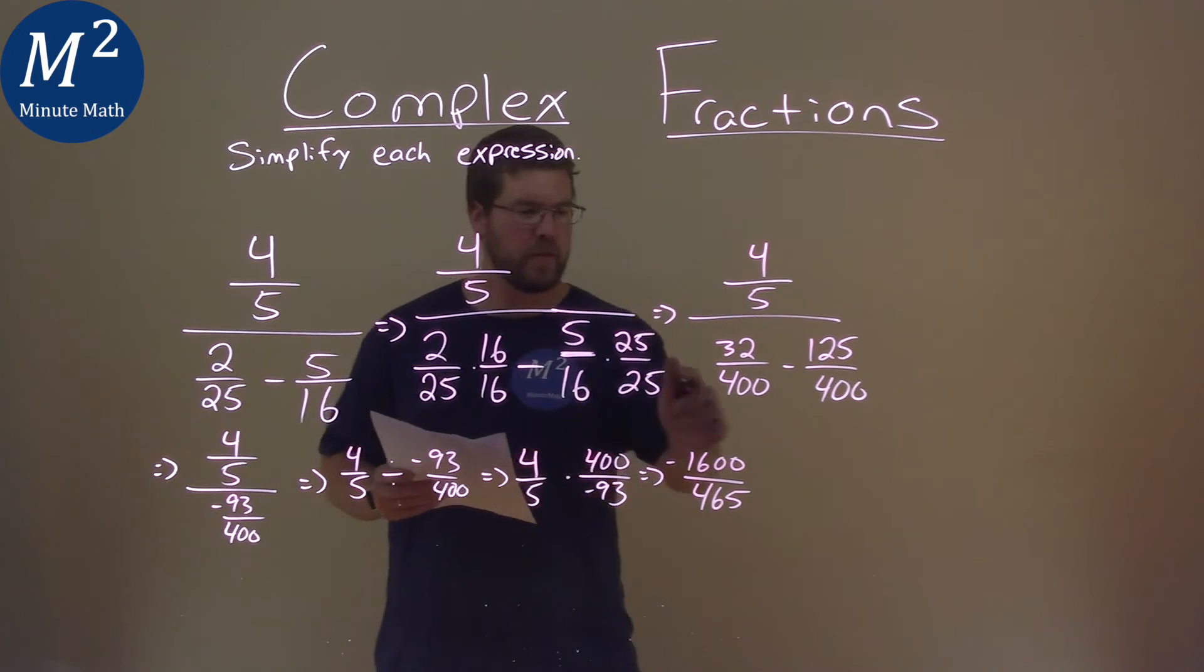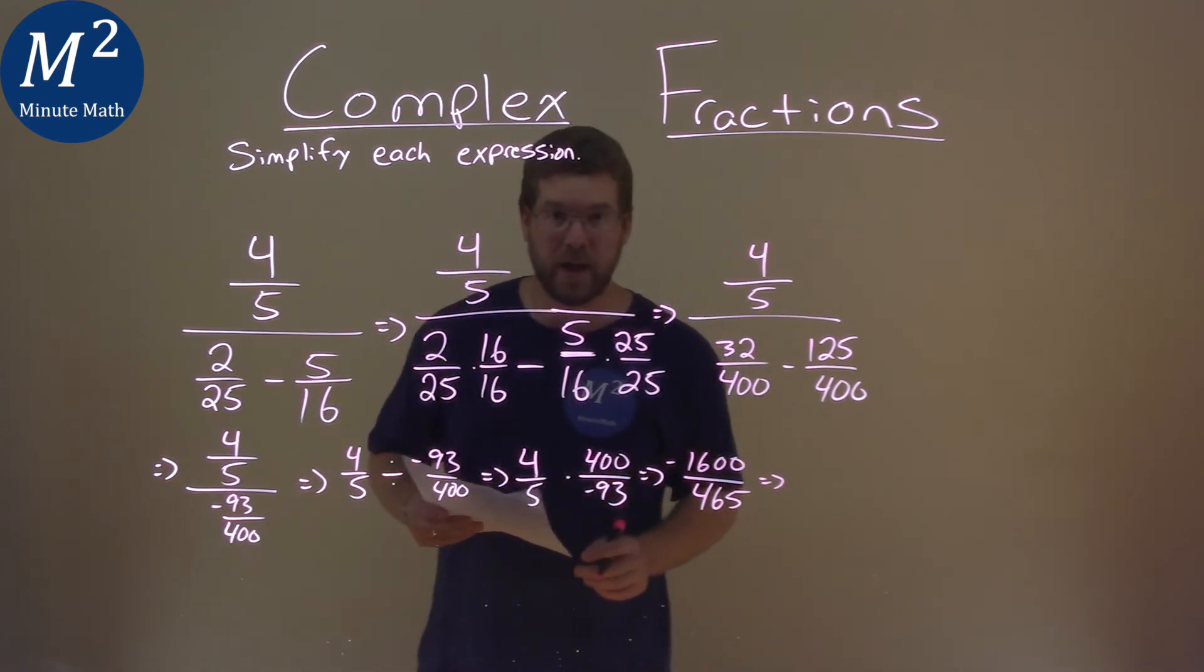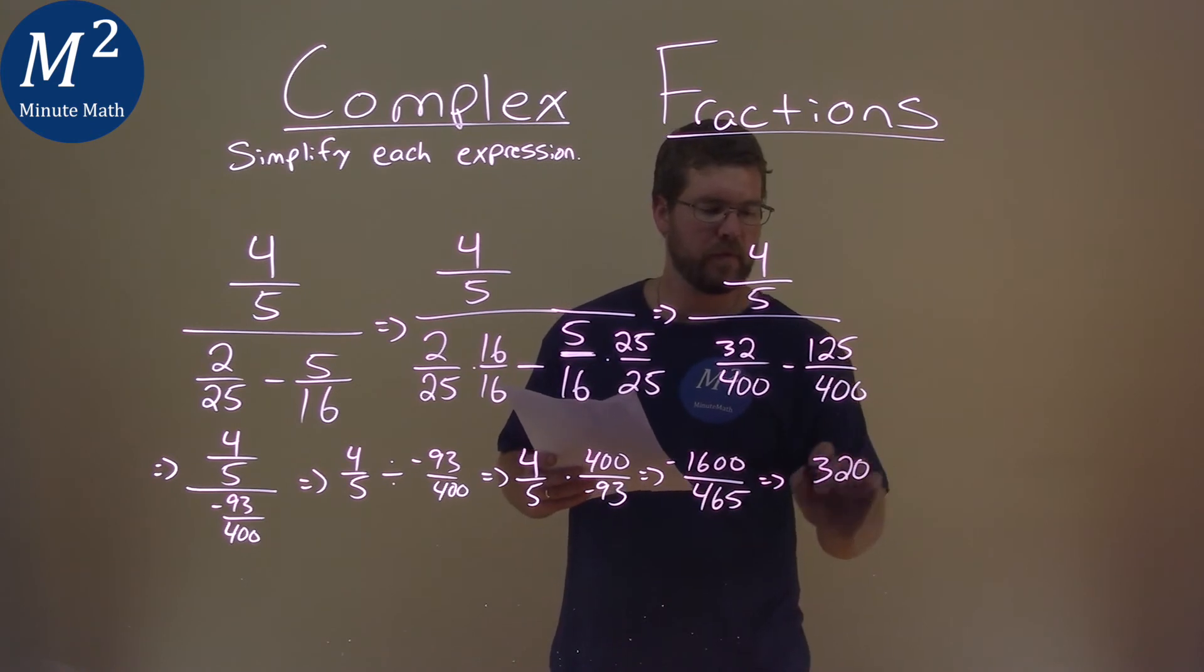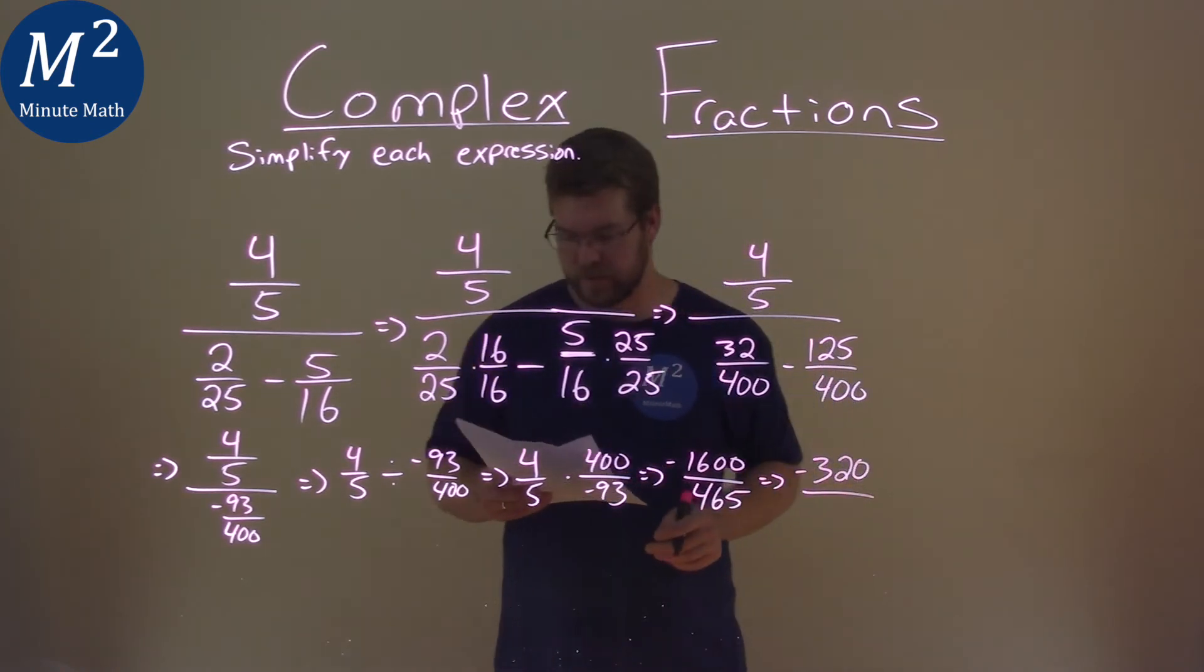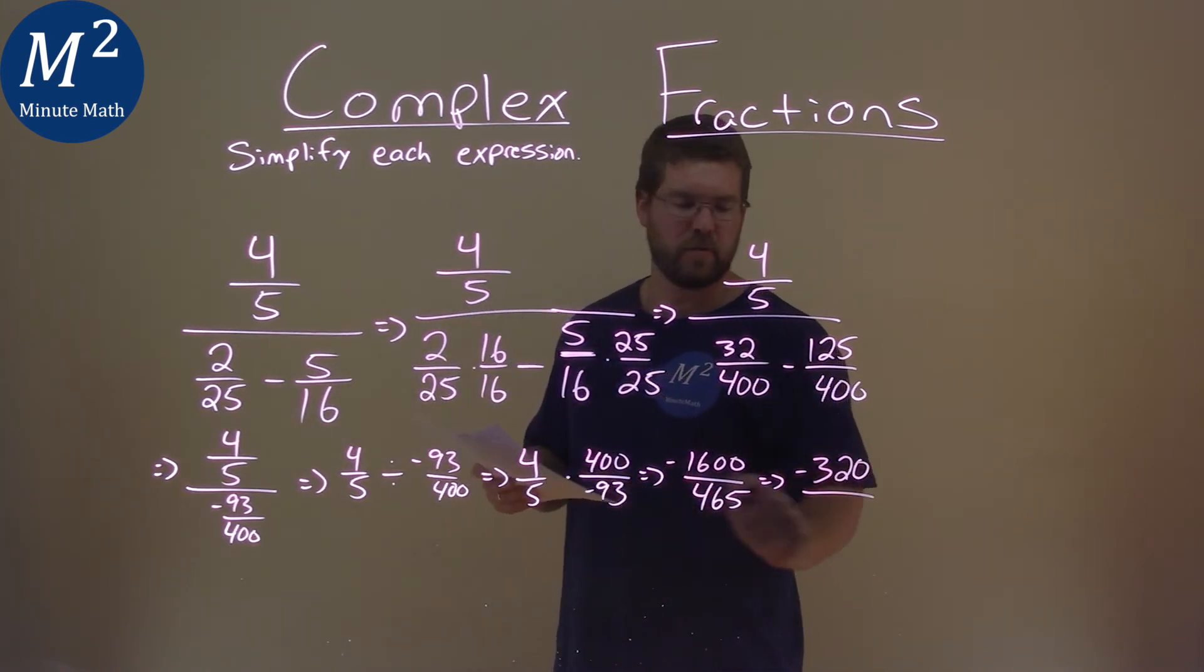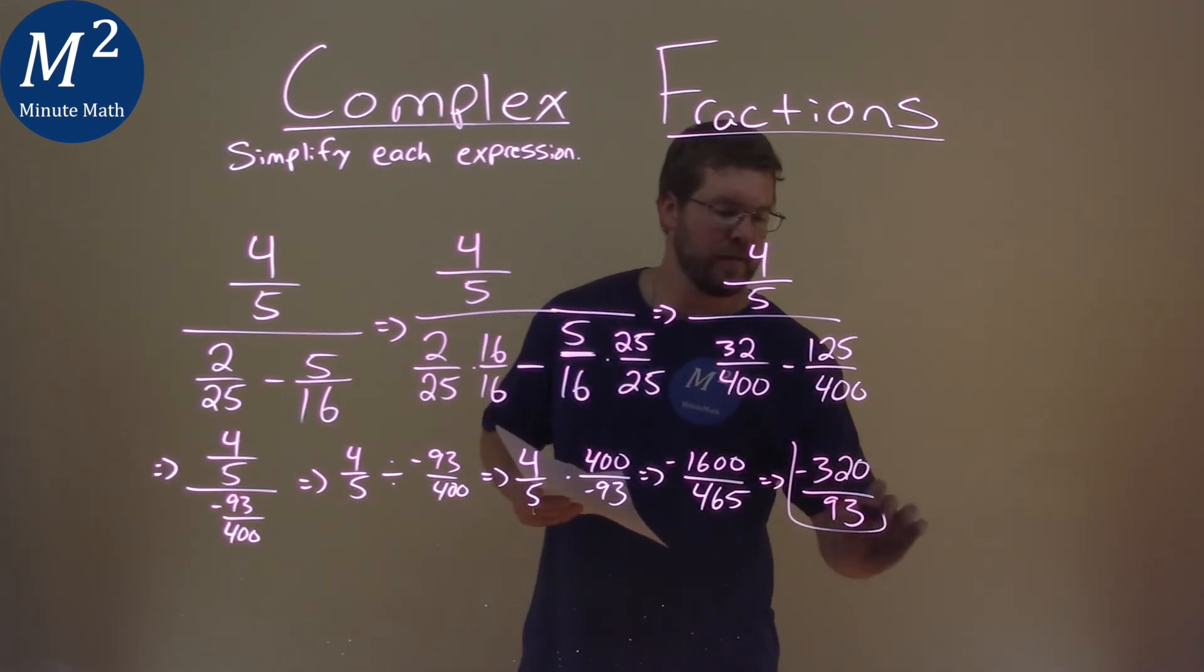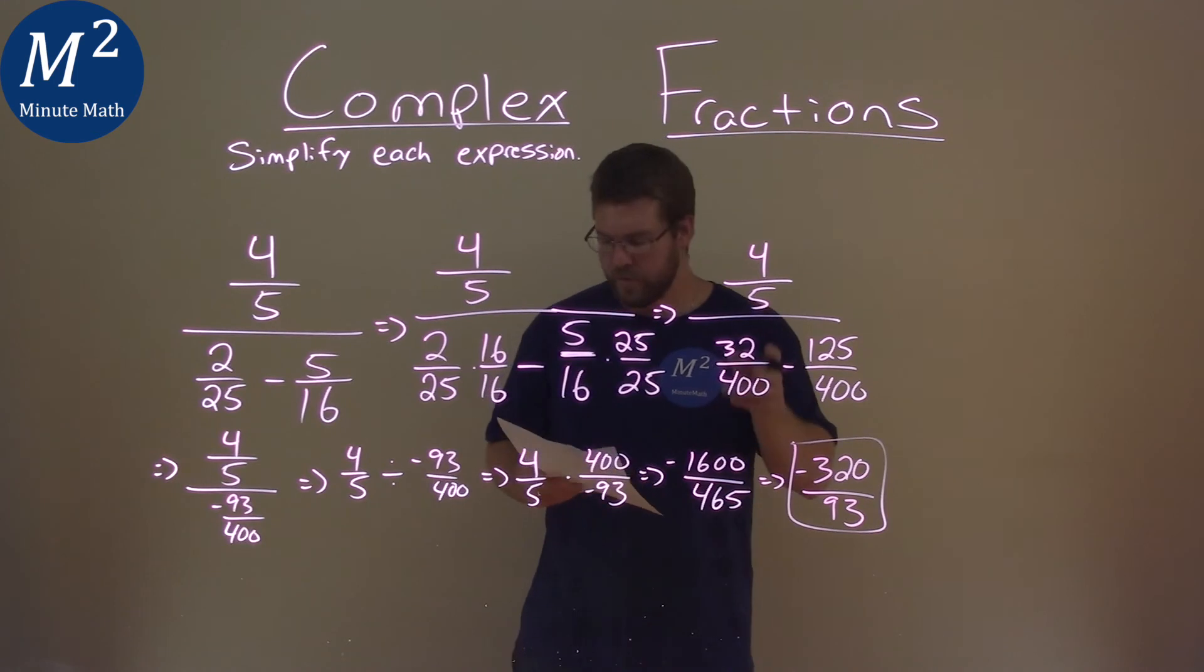From there, both of these numbers are divisible by 5, 1600 divided by 5 is 320, don't forget the negative, and 465 divided by 5 is good old 93 that we saw again. And so our final answer here is negative 320 over 93.